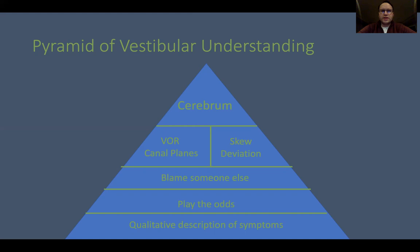Moving up to the next level of the pyramid, we start to play the odds. Experienced general practitioners and those providing emergent or urgent care will do a screening examination, a general medical evaluation to make sure nothing dangerous is going on. Then they'll say this is probably peripheral, send the patient home expecting it to get better. They're generally right — the vast majority of true vertigo and dizziness causes are benign, but they aren't always, and cases can be missed.